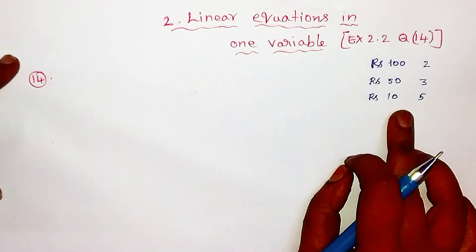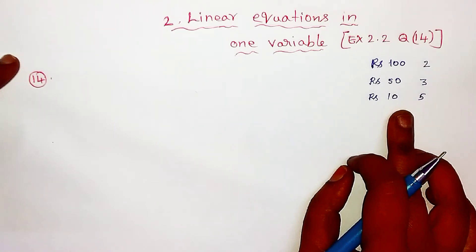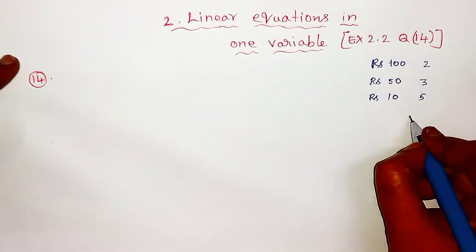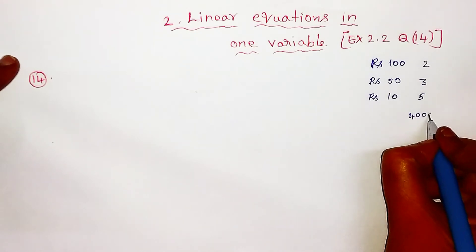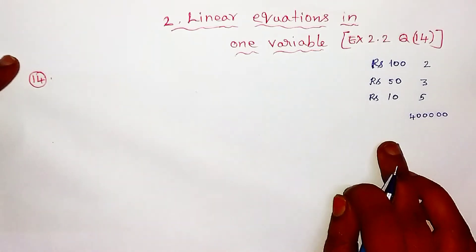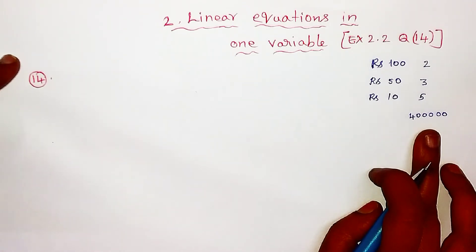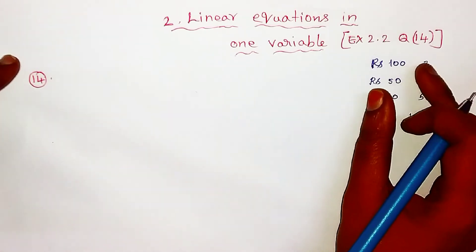The total cash with Lakshmi is 4 lakhs. The question is: how many notes of each denomination does she have?